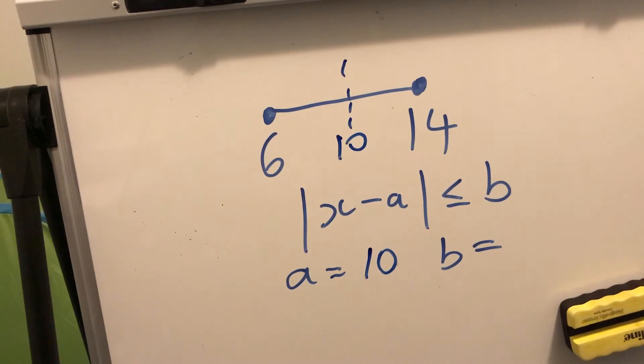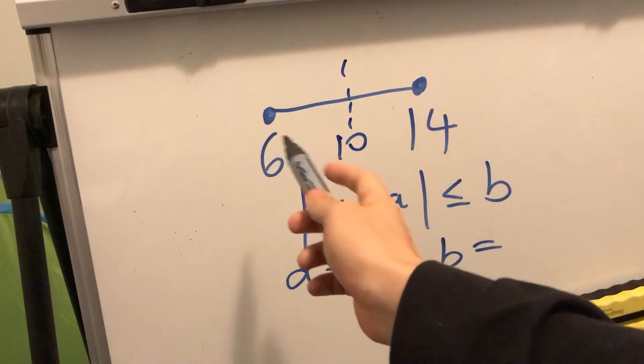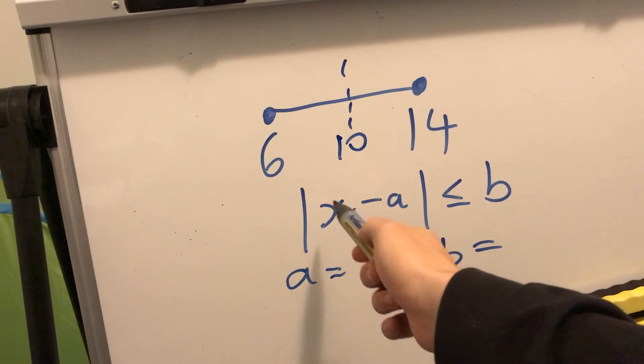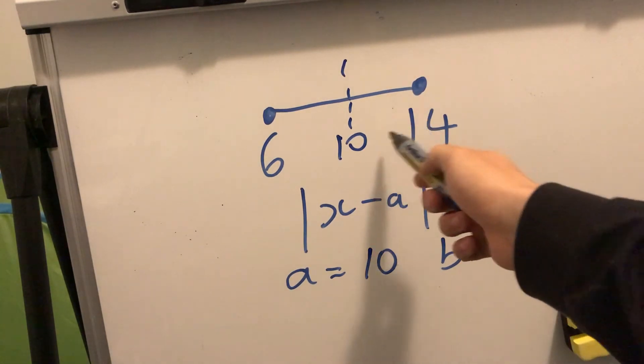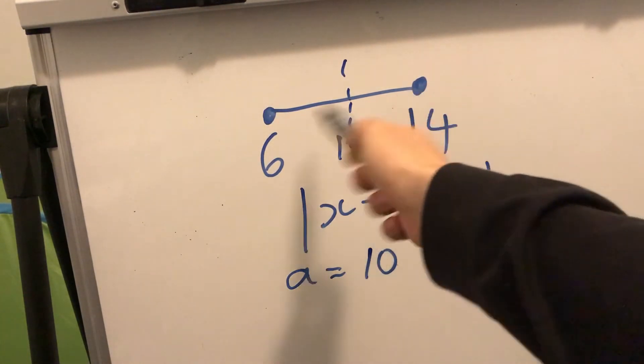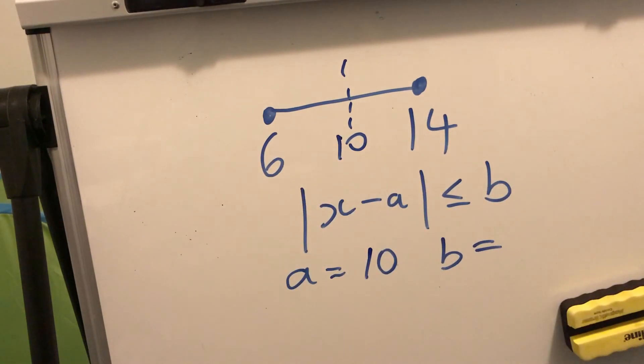And so it's saying that 6 and 14 and everything in between are all the points for which its distance from 10 is less than b. So that makes b actually equal to 4, you see, because 14 and 6 are 4 away from 10.